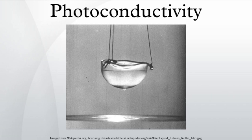Photoresistors are not the only type of photodetector; other types include charge-coupled devices, photodiodes, and phototransistors, but they are among the most common. Some photodetector applications in which photoresistors are often used include camera light meters, street lights, clock radios, and infrared detectors.